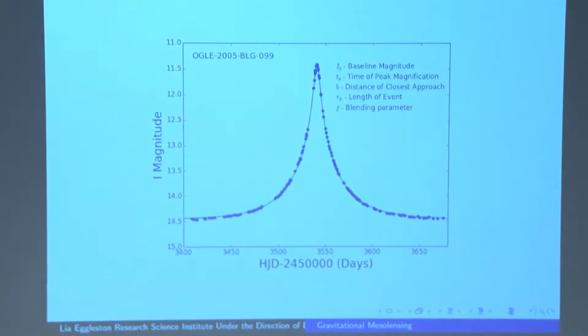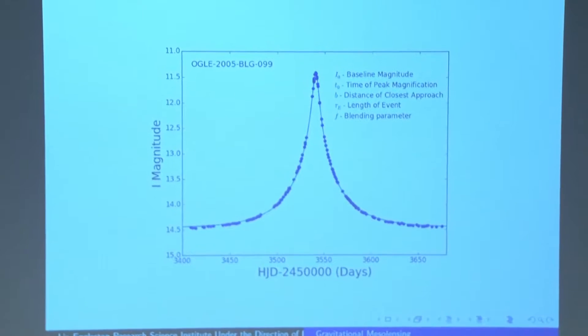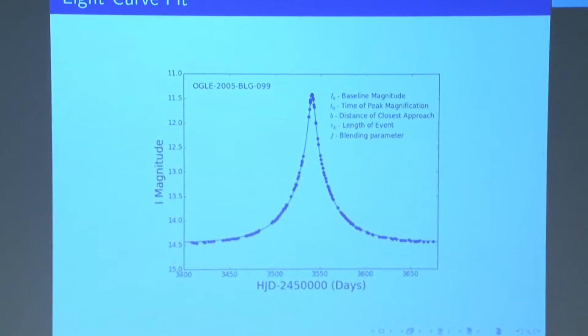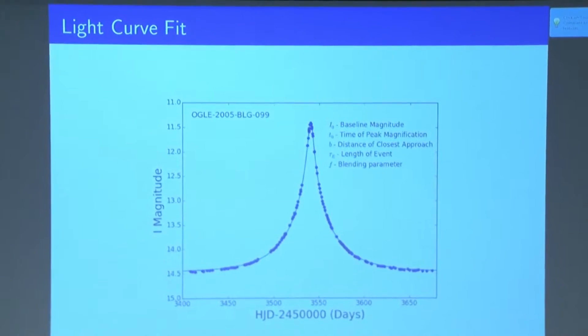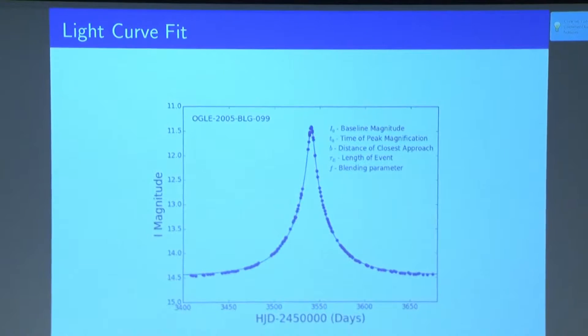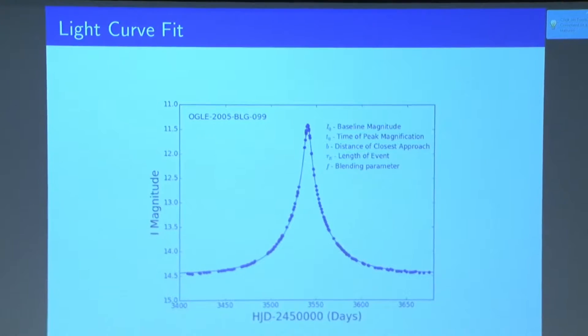So what did we do? We took data from OGLE of these possible lensing events, and we fit light curves, light curve models to the data, using a chi-squared-per-degree-of-freedom goodness-of-fit test. So basically we generated a bunch of thousands of random sets of parameters and found the best fit model among those.